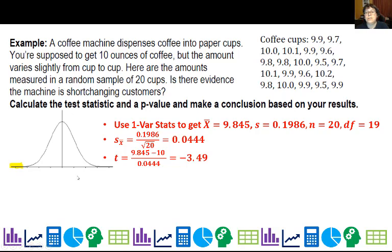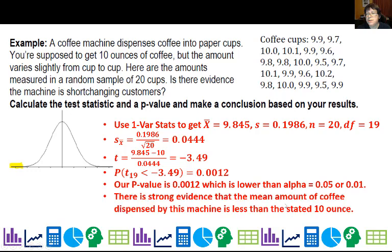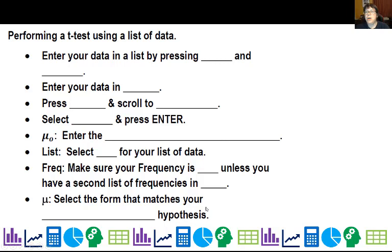And so I get negative 3.49, which is kind of—if we remember our z-scores, that's kind of far away. It's going to be a little different for our t, though, because we have 19 degrees of freedom, which is not super big. And we get a value of 0.0012. All right, so our p-value, that's our p-value. It's lower than our alpha, so we're going to reject our null. There's strong evidence that the mean amount of coffee dispensed by this machine is actually less than the stated 10 ounces.